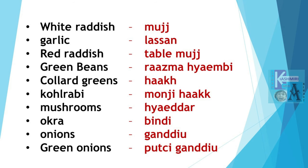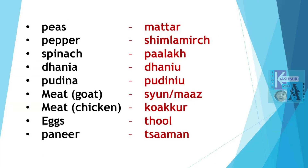Onions are Gandh. Gandh. Green onions are Putsu Gandh. Putsu Gandh. Peas is Matar. Matar. Pepper is Shimla Mirch. Spinach is Palak. Palak. Coriander is Dhaniya. Dhaniya. Mint is Pudna. Pudna.